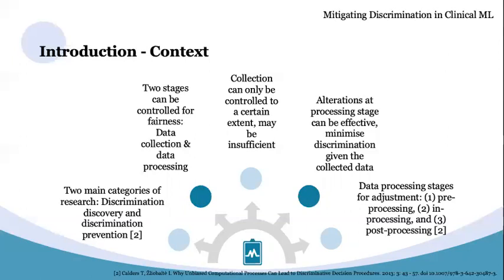Two stages can be controlled for fairness: data collection and data processing. However, controlling the collection stage may be insufficient to ensure fairness. Therefore, altering the processing stage can be beneficial as this works to minimise the discrimination given the collected data, and so can help combat pre-existing disparities in datasets.